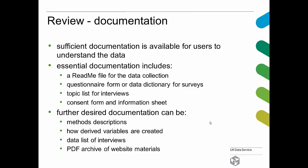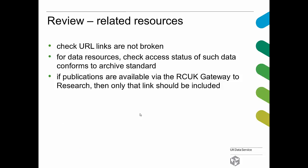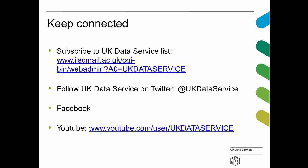The main aim is to have sufficient documentation so that users can understand the data. From our experience, we know there are certain essential documents that we absolutely need, such as a questionnaire form or a data dictionary, topics and question lists for interviews, information on the consent form, and the information sheet that was given to participants. Again, if any of this is missing, we contact the depositors and ask them to upload it. Finally, related resources can be uploaded — we check that those links are indeed working and that there are no copyright issues, for example in the case of publications that have been uploaded. If publications are available via the Gateway to Research, then only that link should be included, as that is a good standard for that kind of information.